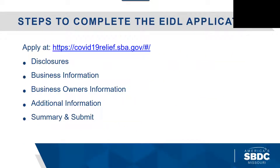Moving on to how to apply for the EIDL loan program, you will have a few steps to complete. You can access the application at the address at the top of this slide, and there are five pages that you will be completing. The first page is the landing page of the application which includes their disclosures, then business information, business owner's information, additional information, and then finally the summary page before you submit.